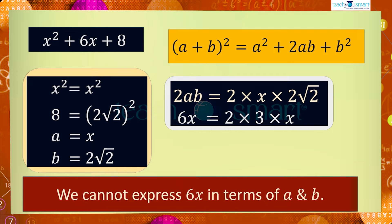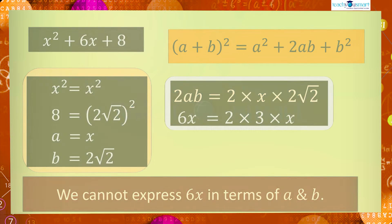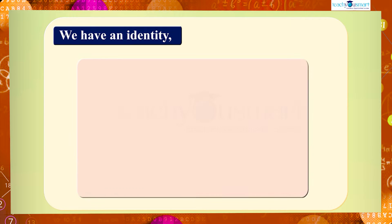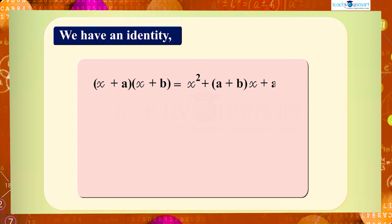Then how can it be factorized? Yes, we have an identity that contains three terms: (x + a)(x + b) = x² + (a + b)x + ab.